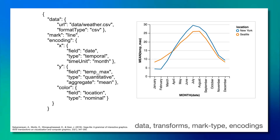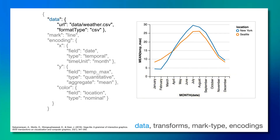Let's dissect a basic Vega-Lite visualization to comprehend its structure. Here we have a visualization that was published in the original paper introducing Vega-Lite — a mean temperature plot for various months in New York and Seattle. Let's start with the data type. We have weather data as a CSV file, and you can pull many different data types into this element.